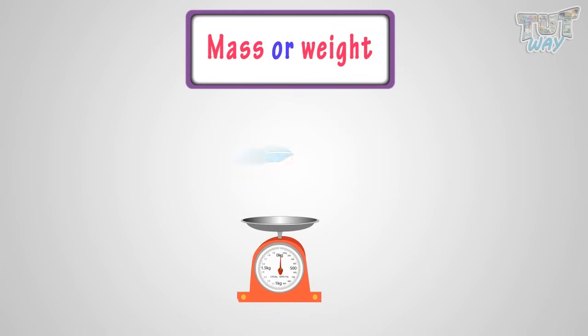Here is a feather. Its weight is about just one gram. We write it like this. Here is a disposable spoon. Its weight is about 5 grams. We write it like this.